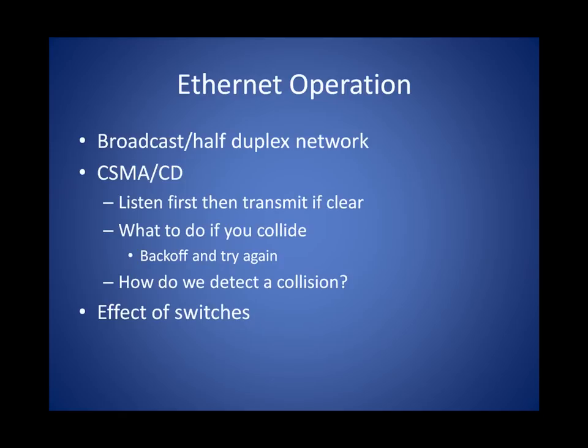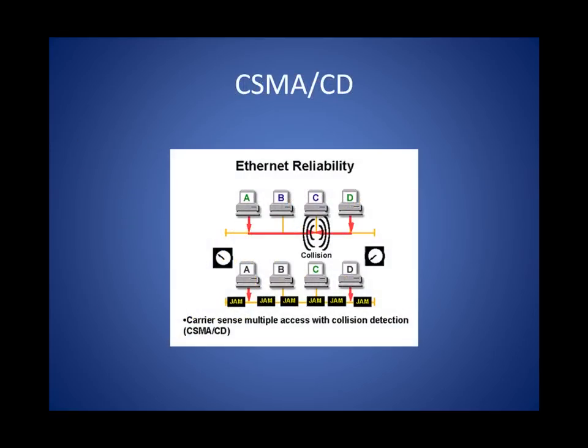Other nodes may transmit at the same time, causing a collision on everyone's receive lines. Nodes involved in a collision back off and then try again later. We detect a collision by an increased power or voltage level. But as soon as switches were introduced instead of hubs, collisions were drastically reduced if not eliminated entirely. In this diagram, nodes A and D both listen, determine the network is clear, and transmit at about the same time. A collision occurs somewhere in between. All nodes hear it due to the increased voltage, but A and D — because they obeyed the minimum frame size rules — know their frame was involved. So these nodes issue a jam signal.